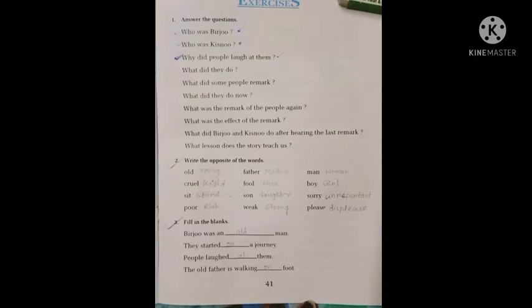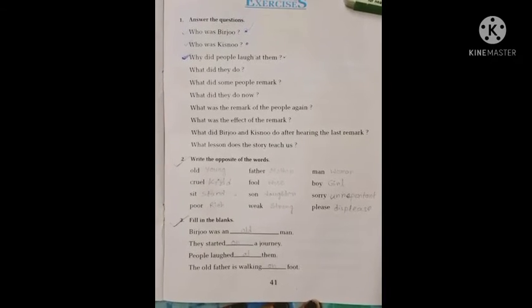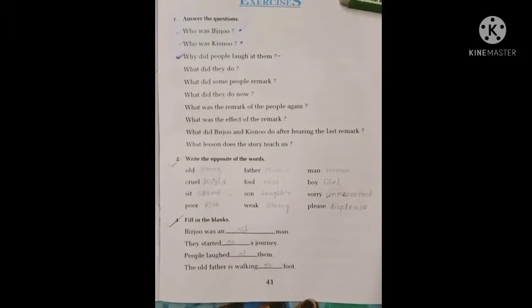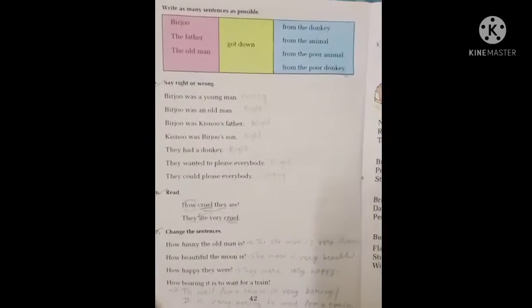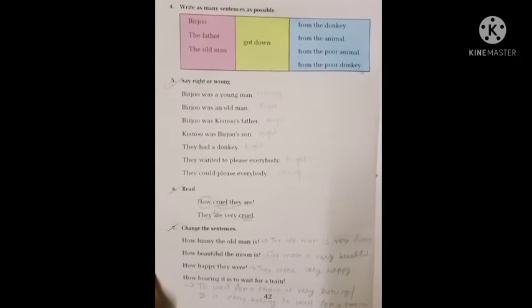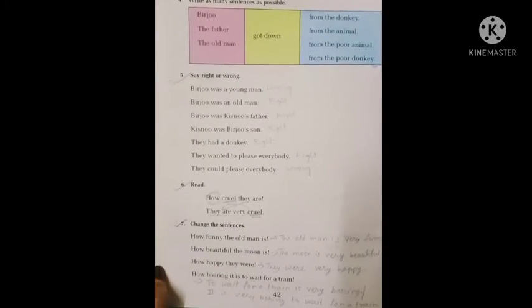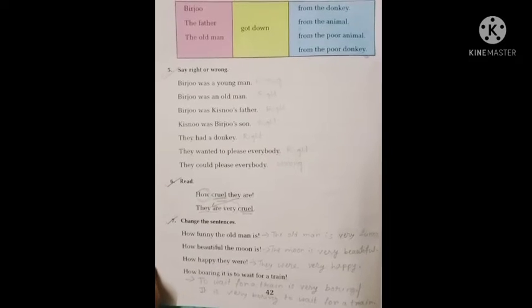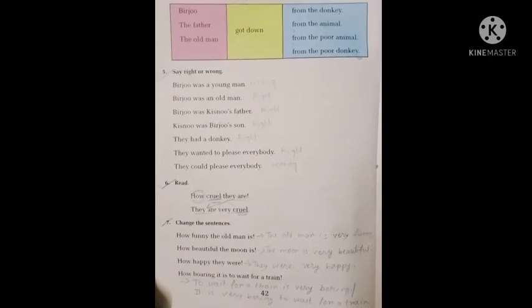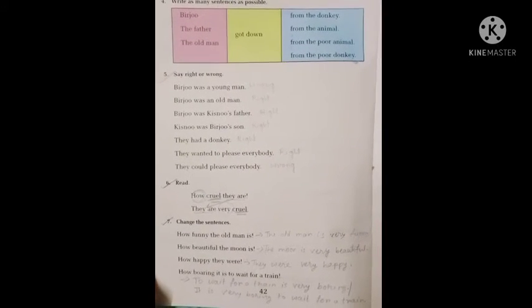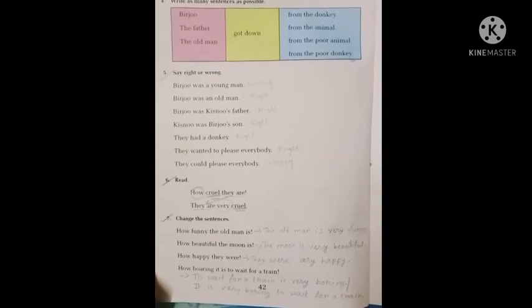I have written the answers here. Question number 3 is fill in the blanks. Follow this. Come to the next page. Say right or wrong. You have to write here if the sentence is right or if the sentence is wrong. I have written these answers.